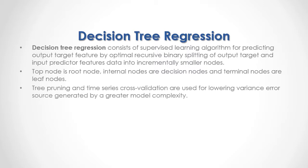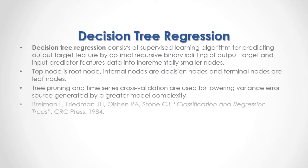Tree pruning and time series cross-validation are used for lower variance error search generated by greater model complexity. For full reference, I recommend that you read Breiman, Friedman, Olsen, and Stone — Classification and Regression Trees — published by CRC Press in 1984.